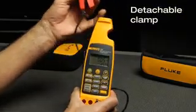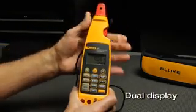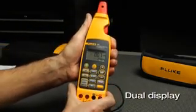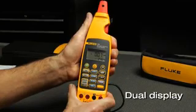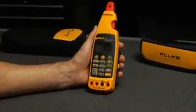The detachable clamp has an extension cable for measuring in tight spots. The dual display shows both the milliamp measurement and the 0-100% of 4-20 milliamp span. The measurement spotlight helps find signal wires in dark enclosures.